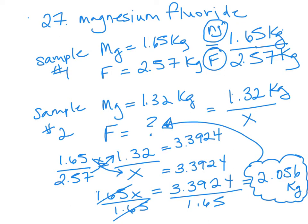Just to break down this problem again: once you know the masses for one sample, you can use that ratio or fraction to figure out the unknown mass of one of the elements in the compound for a second sample. You get a ratio like this — 1.65 divided by 2.57 is equal to 1.32 over X — make them equivalent, use cross multiplication to find the product, and that product helps us find the unknown. That's how you set up problems like number 27.